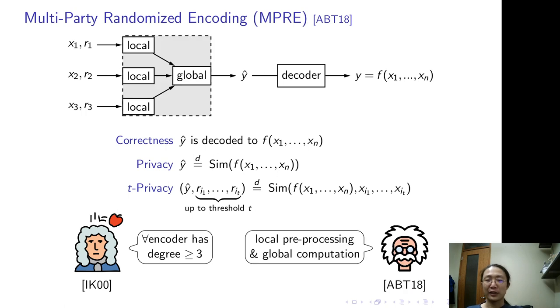But this is not the end of the story. Applebaum, Ishai, Kushilevitz, and Sahai came and said, look, you can divide the encoder into local parts and a global part. And we construct the MPRE that the global part of the encoder has degree 2. Once you have such degree 2 MPRE, you are almost done.